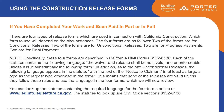The forms are described in California Civil Code sections 8132 to 8138. You could Google California Civil Code 8132 and find these. Each of the statutes about these four releases contains the following language: 'The waiver and release shall be null, void and unenforceable unless it is in substantially the following form.' This means the language in these statutes has to be followed pretty much verbatim in your releases.